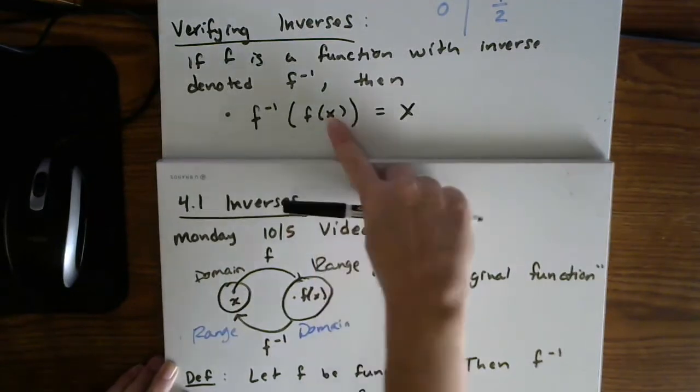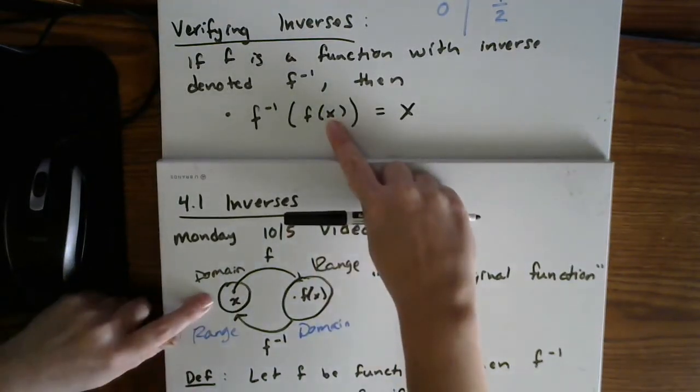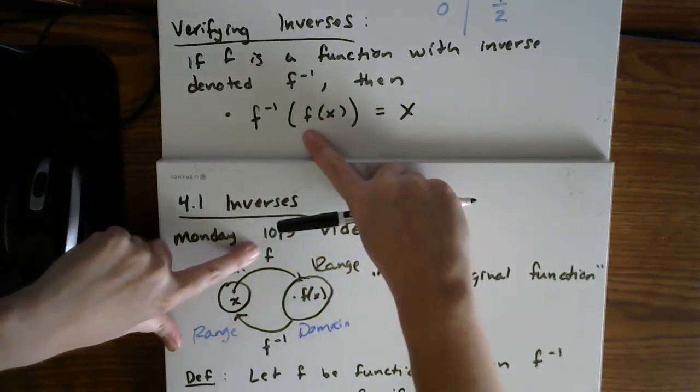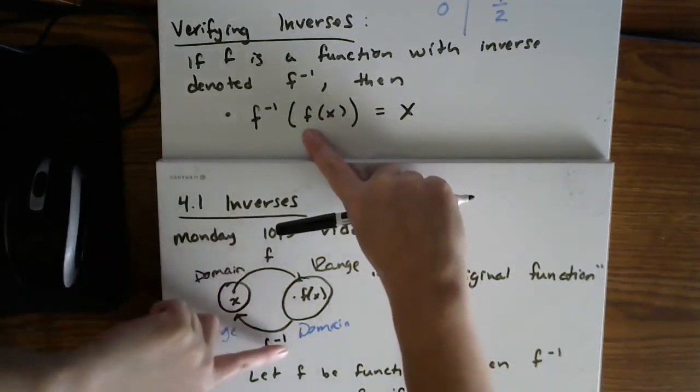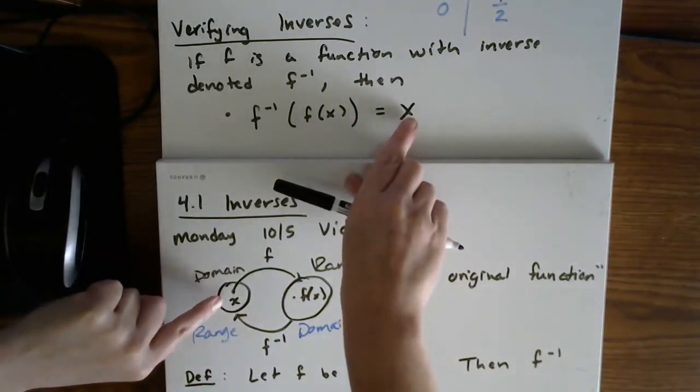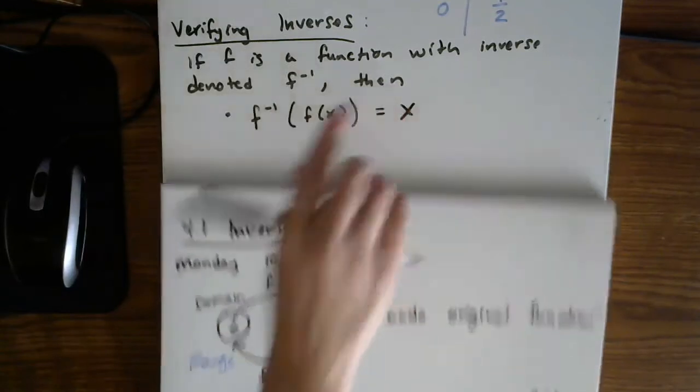And notice you end up with where you started. So again, I start at x, I run it through the f function, and then I compose that with running it back through the inverse, and I end up right where I started. So that's one composition.